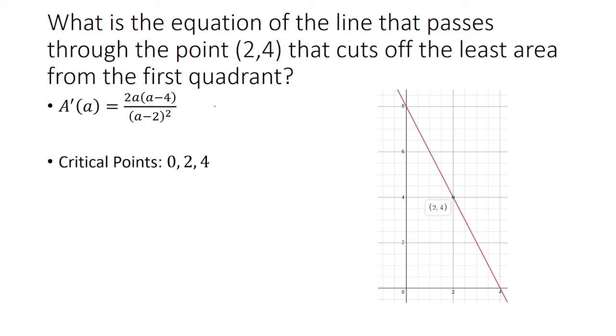So notice, if I set 2A equal to 0, we get A is 0. If I set A minus 4 equal to 0, we get A is 4. And if you set A minus 2 squared equal to 0, we get A is 2.